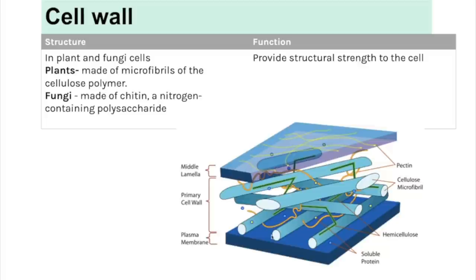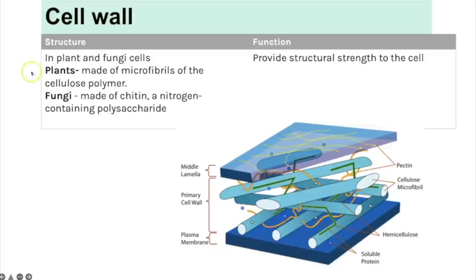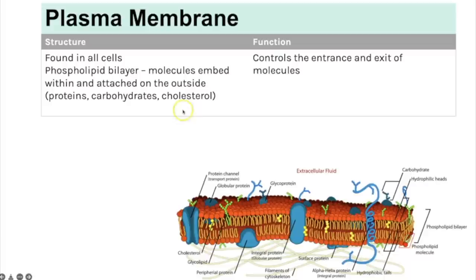Cell walls are not found in animal cells but are found in fungi and plant cells. They provide structural strength and prevent cells from bursting when water moves in by osmosis. In plants, the molecule providing strength is cellulose; in fungi it is chitin. The plasma membrane is found in all cells — it is the cell surface membrane and is made of a phospholipid bilayer with different molecules embedded within it. Its function is to control what can enter and exit the cell.